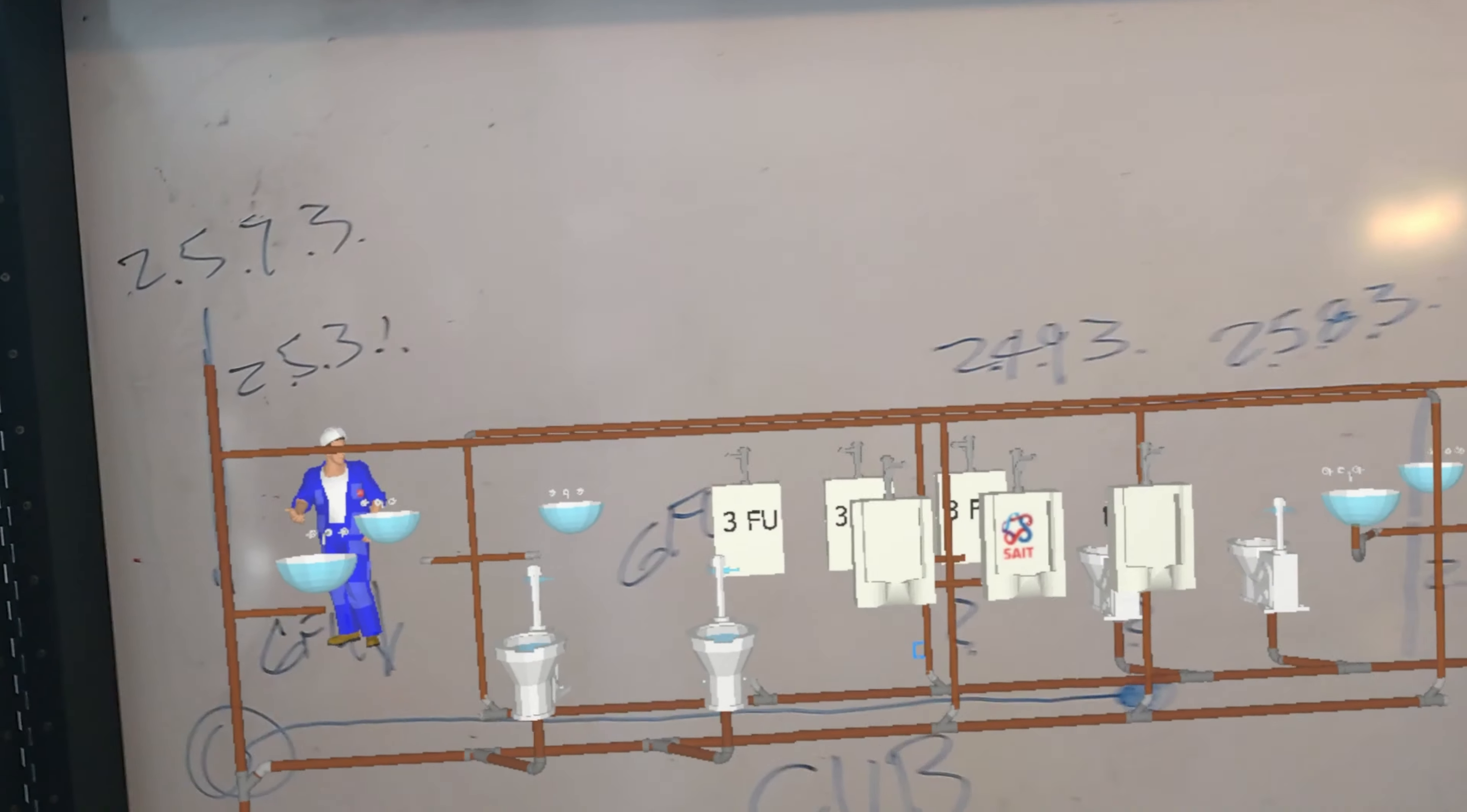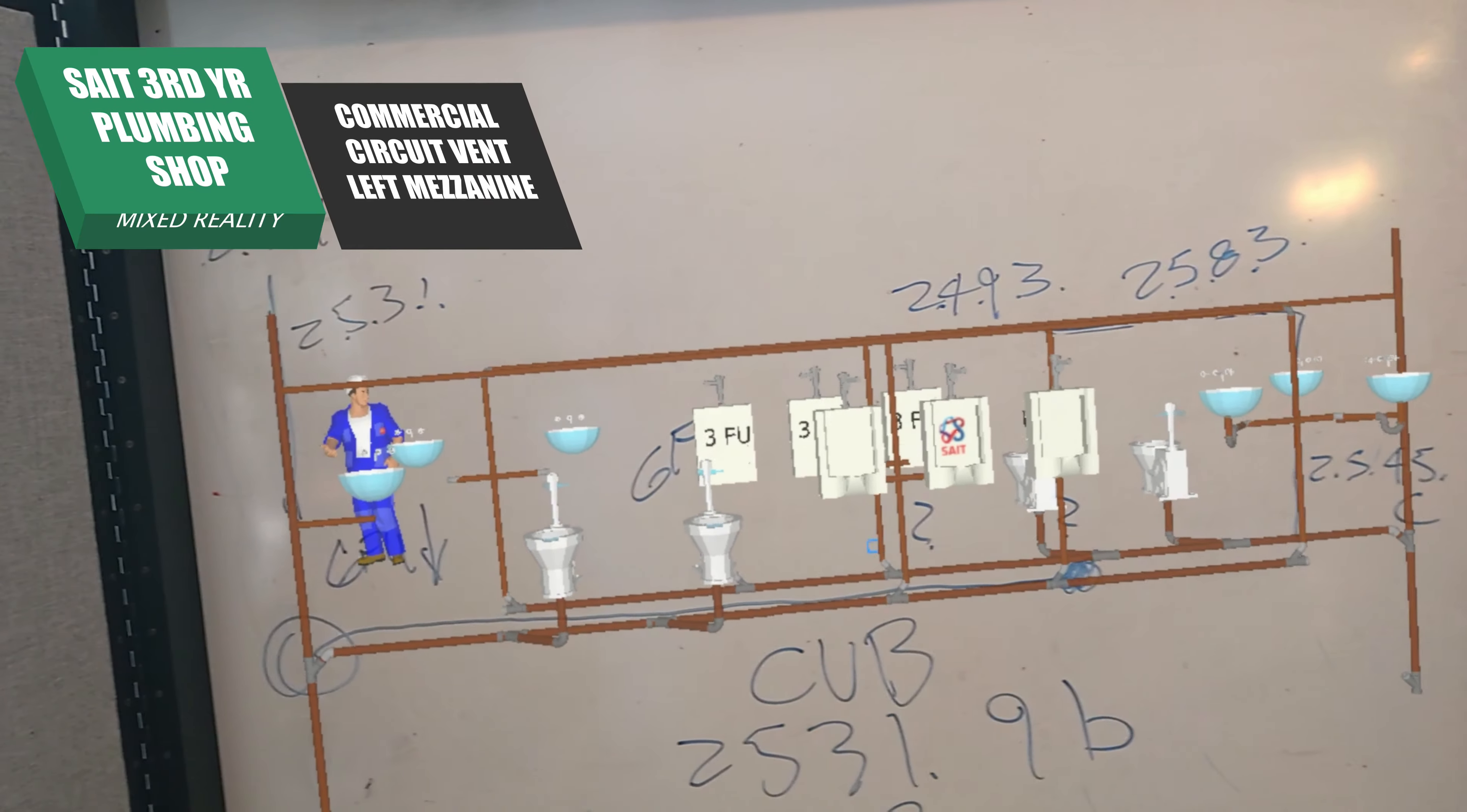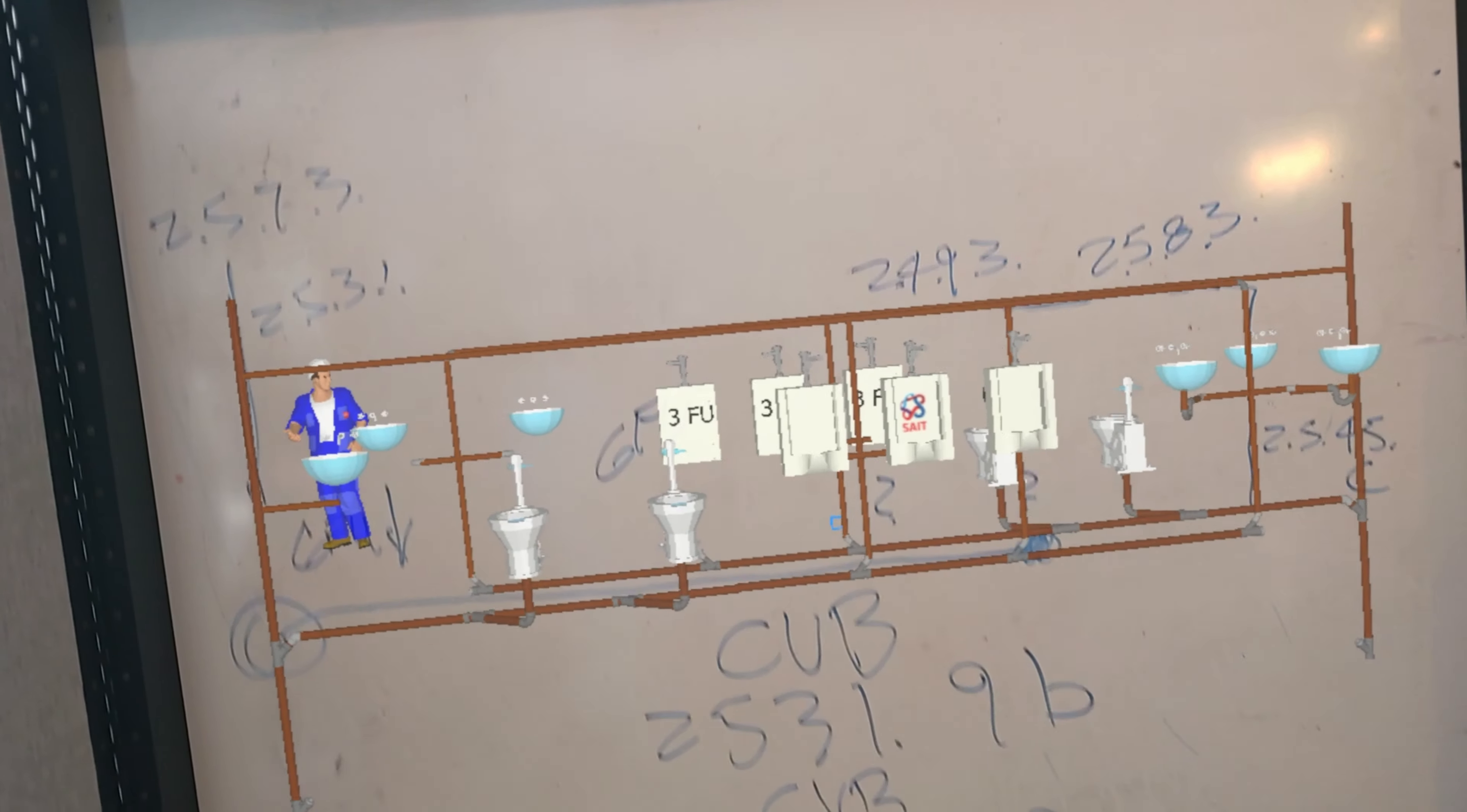And these are the code clauses that I'm going to want you to know as you do your circuit vent or commercial circuit vent on the mezzanine for third year. So that's it for today. In my next lesson, I'm going to show you a little bit how to do another commercial circuit vent, but it will be on the right hand mezzanine in the commercial shop. Thanks for viewing.